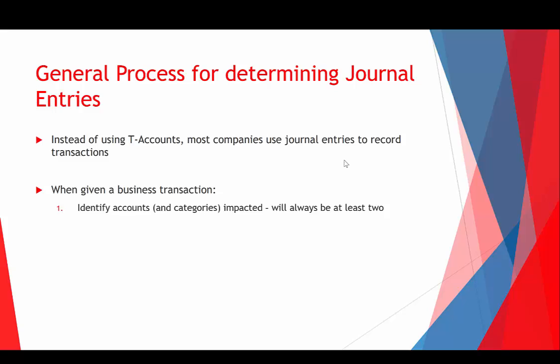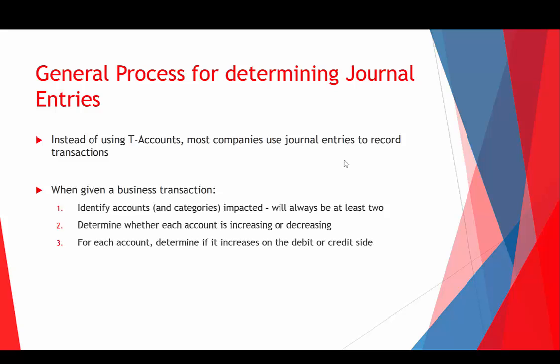The five-step process: step one, identify the accounts impacted and their categories — whether it's an asset, liability, or equity account, because that helps you decide whether to debit or credit. There are always at least two accounts. Step two, determine whether each account is increasing or decreasing. Step three, for each account, determine if it increases on the debit or credit side. Step four, record your journal entry. Step five, double-check that debits equal credits — if they do, you're on the right track; if they don't, something's off and you want to give it another look.